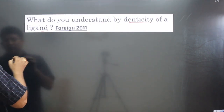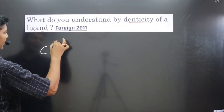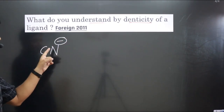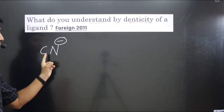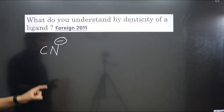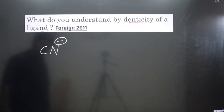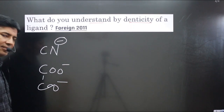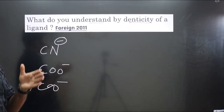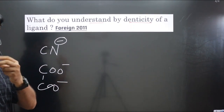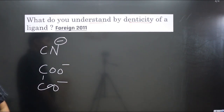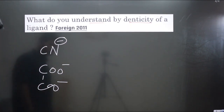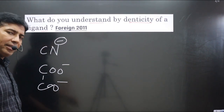For example, the cyanide ion has only one negative charge, so it is a negative unidentate ligand because it can form only one bond. But if we take COO⁻ (carboxylate), two negative charges are present, so it is a didentate ligand because it can form two coordinate bonds. These are examples of anionic unidentate and didentate ligands.